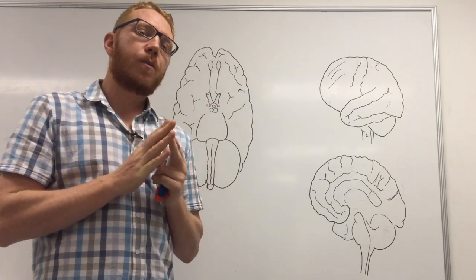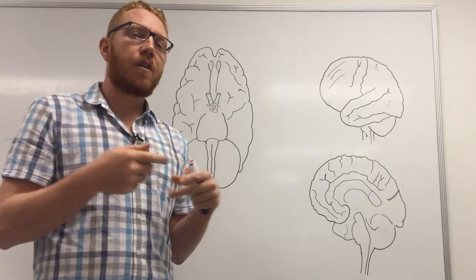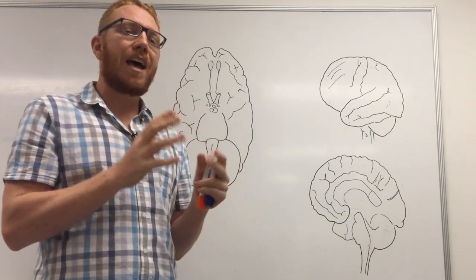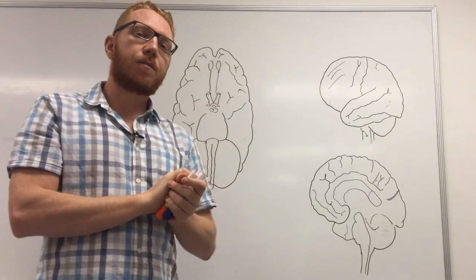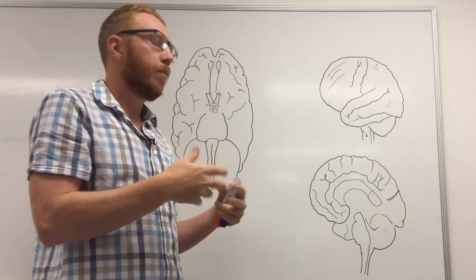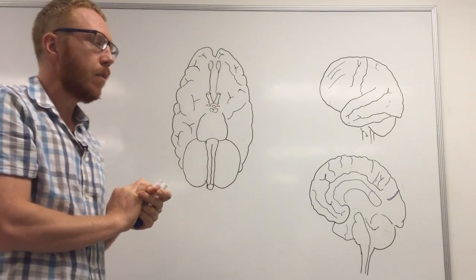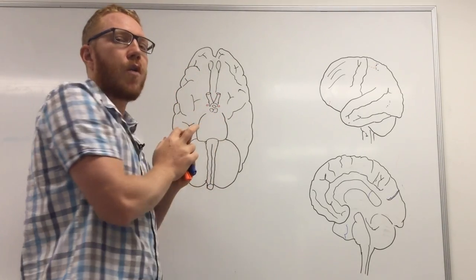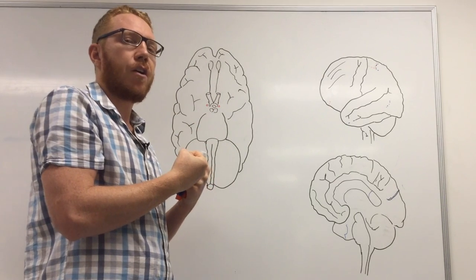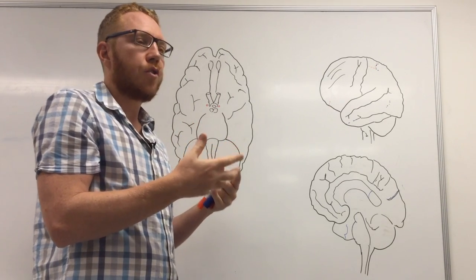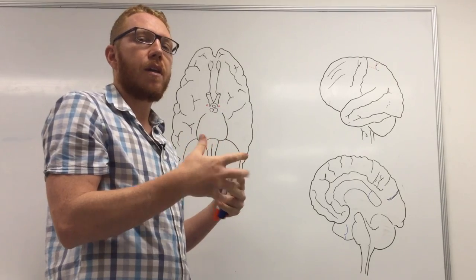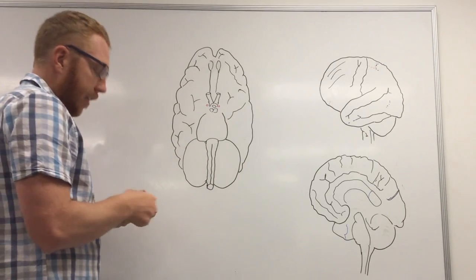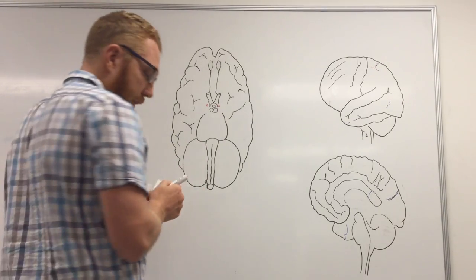The arteries that supply the brain: there are only two pairs to worry about — the vertebral arteries and the internal carotid arteries. These two vessels supply all the arterial blood to the brain. The majority of blood going into the brain goes more towards the grey matter, because that is much more oxygen-hungry and needs far more nutrients and flow than the white matter.